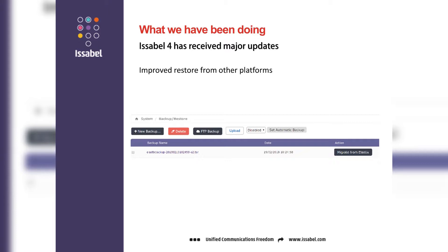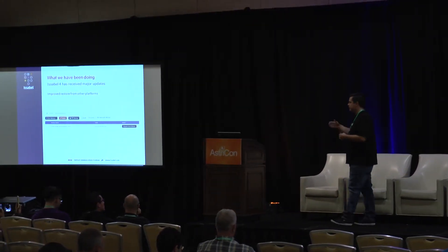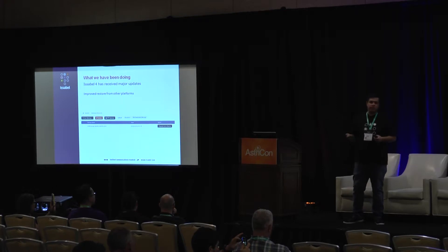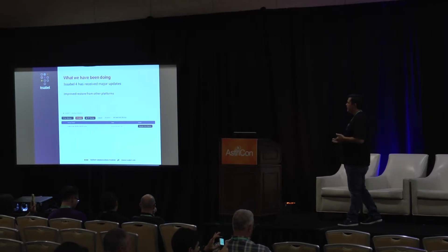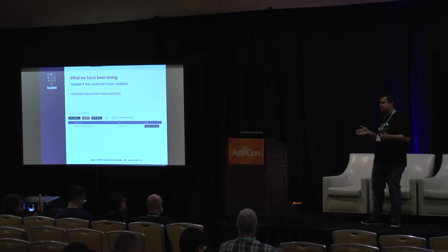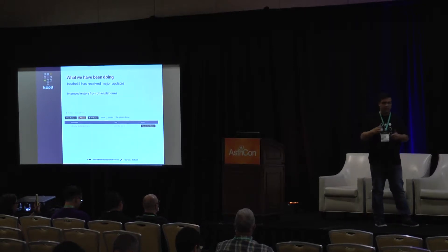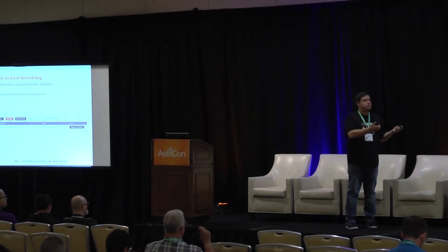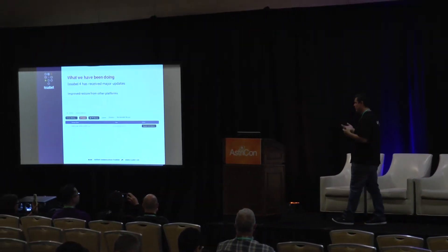This was a big thing, especially when moving the installed base from Isabel 2.5 to Isabel 4 — having the ability to move configurations from other solutions including Elastix. You can just upload the backup and restore it in your Isabel without any problems. The idea is to give continuity, and now you have no excuses to move to newer versions. A lot of people were stuck with CentOS 5 and old solutions. Well, Elastix is not there anymore. Now you have the ability to go to something newer that's more refined and has more features.